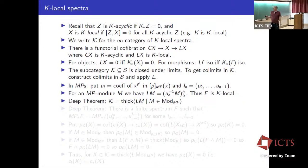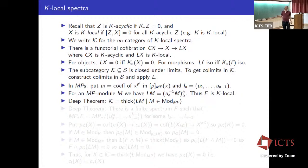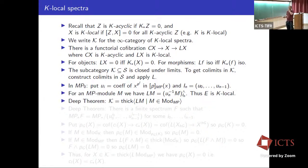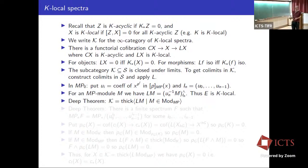Any K-local spectrum lies in the thick subcategory generated by localizations of MP-modules. It's a formal fact that you can build any K-local spectrum by an infinite construction from these localized MP-modules — forming an infinite tower whose fibers are of the form LM — and the homotopy inverse limit is your K-local object. The fact that you can do this in finitely many stages is deeper: it's tightly connected to the Morava stabilizer group having finite virtual cohomological dimension.